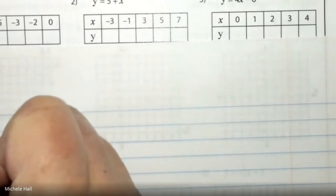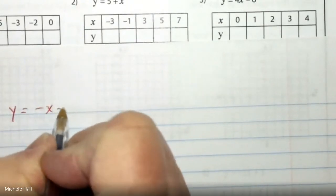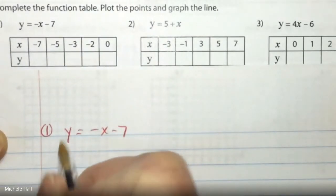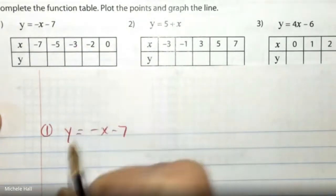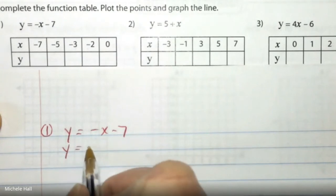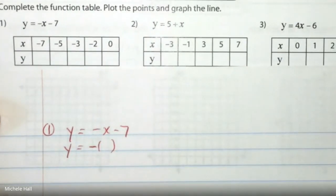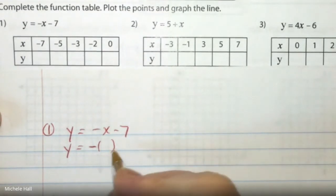So number one, we have Y equals negative X minus seven. One, two, three, four, five. There's five of them. So I'm going to put negative and then the parenthesis. Notice that that negative is in front of the X. So it's going to be negative parenthesis.